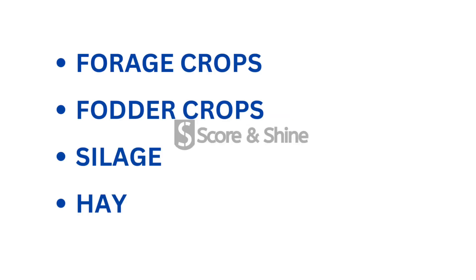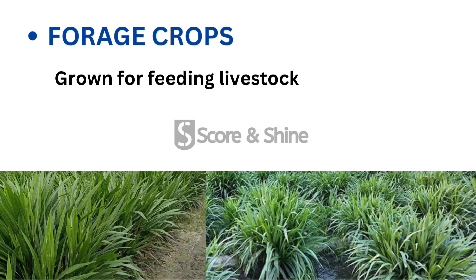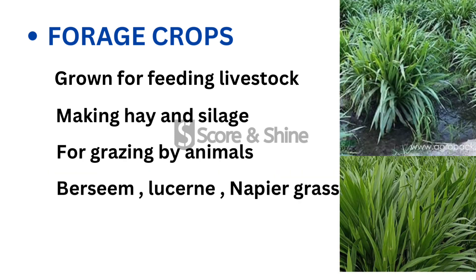This video is about forage crops, fodder crops, silage, and hay. Forage crops are crops which are mainly grown to feed livestock, for making hay or silage, and for grazing by animals. Examples of forage crops are berseem, lucerne, napier grass, etc.